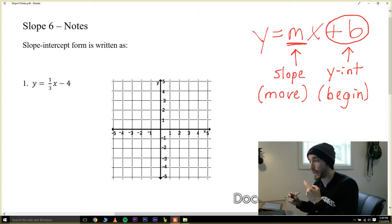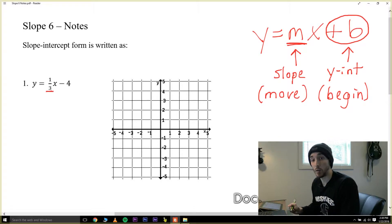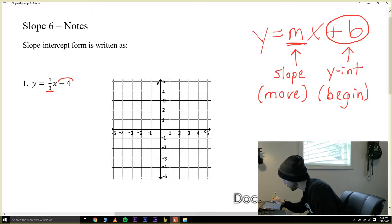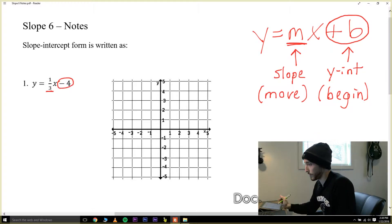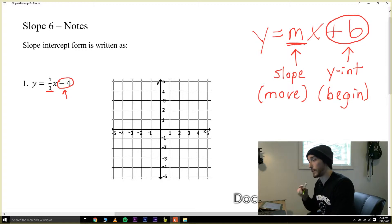The first thing I want to look at is I want to underline the slope of this line. We're going to underline the number one-third because that's the slope of the line. That'll tell us where to move. Then I want to circle the y-intercept. In this case it's minus four. So the minus four tells us where to begin and then the one-third tells us where to go from there.